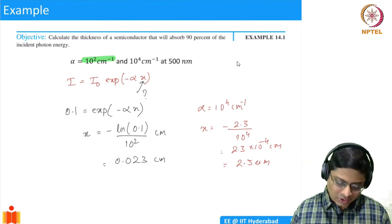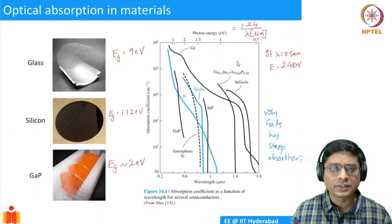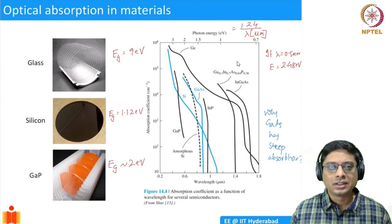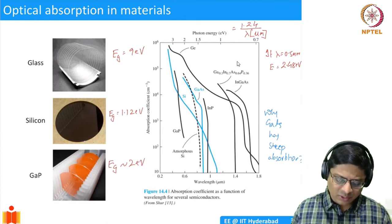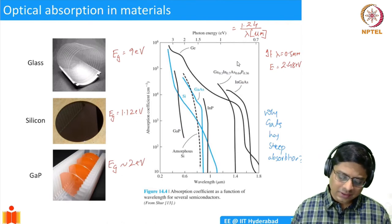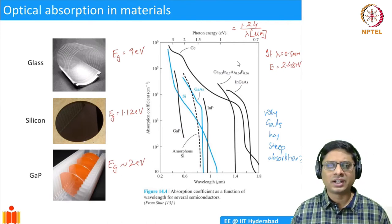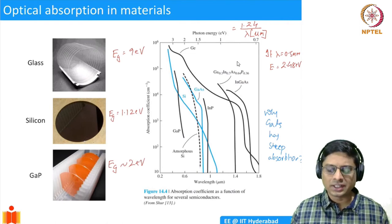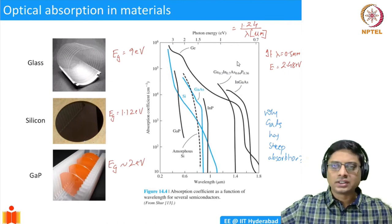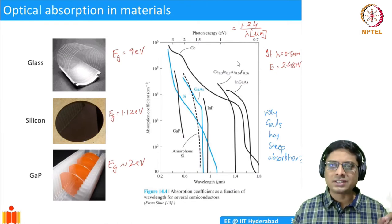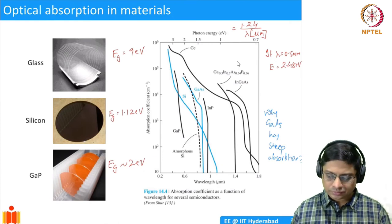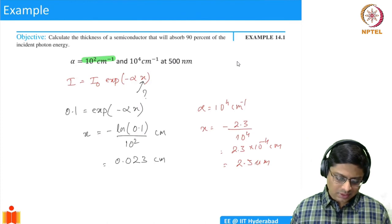This explains why silicon wafers are opaque — they are typically 500 micrometers thick with high absorption — while glass transmits visible light. Even glass, if made meters thick, would show some absorption since α is small but the thickness is large.